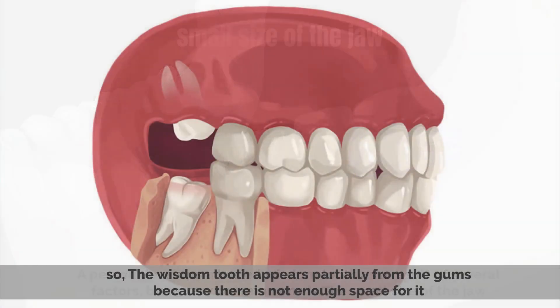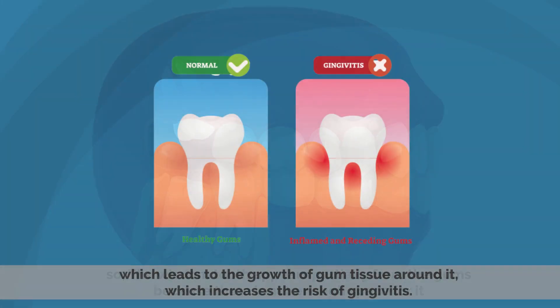The wisdom tooth appears partially from the gums because there is not enough space for it, which leads to the growth of the gum tissue around it, which increases the risk of gingivitis.